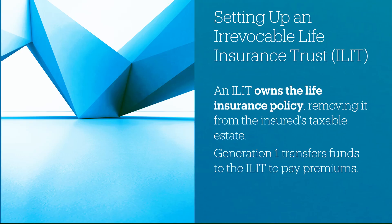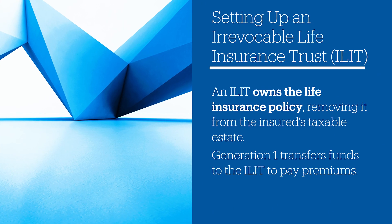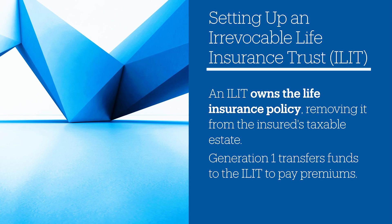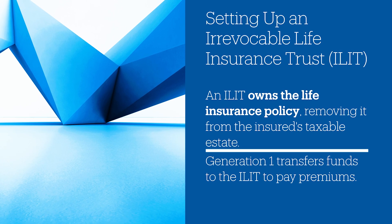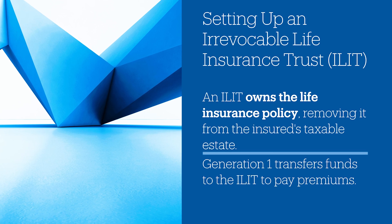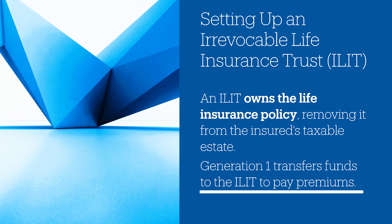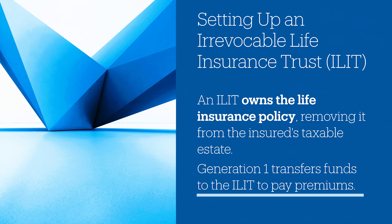Now let's look at some of the structures that could own the life insurance. Of course, you could own it on your own and have successor owners for it, but you can also have an irrevocable life insurance trust — an ILIT — own this policy. The ILIT owns the life insurance policy, which removes it from your taxable estate. Generation one transfers funds to the ILIT to pay premiums by gifting those dollars to the trust.